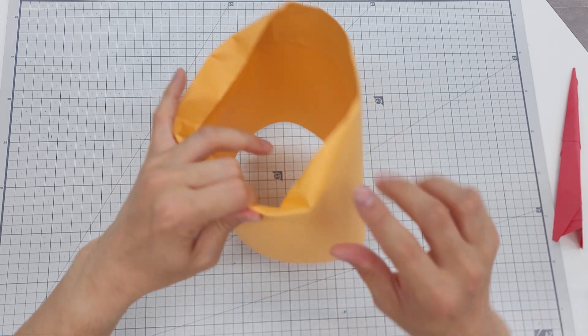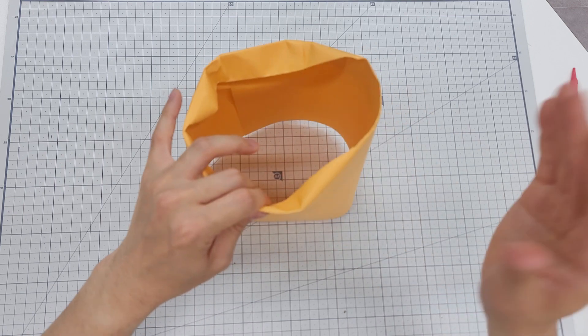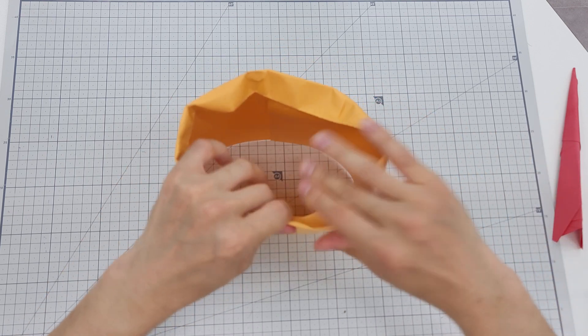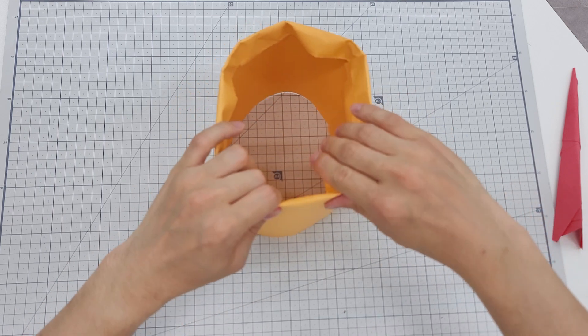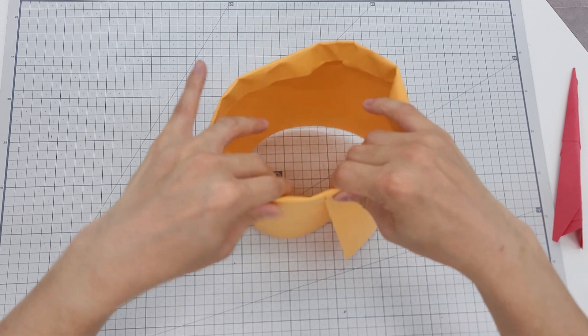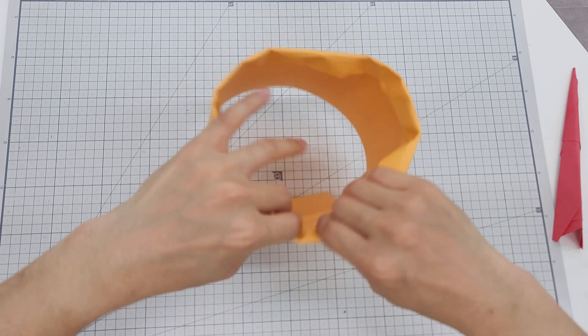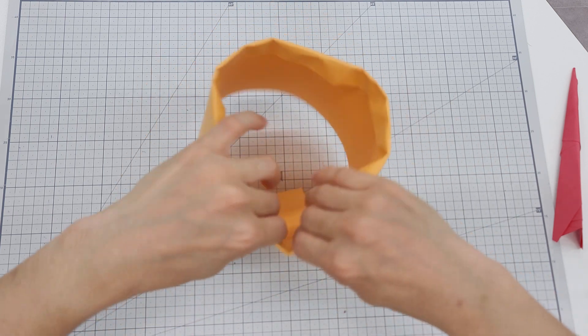It might get some wrinkles, but it doesn't matter. Just fold it anyway. So, there's like 8 centimeters cross section here.